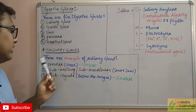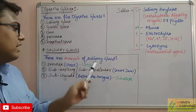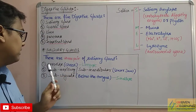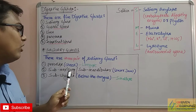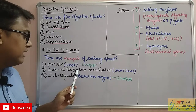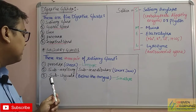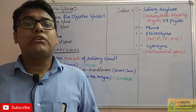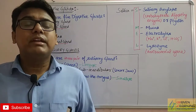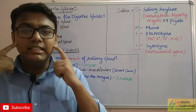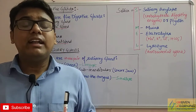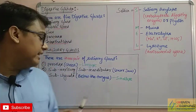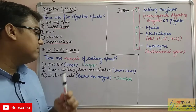As you can see on the board, there are three pairs of salivary glands. First is parotid, second is sub-maxillary or sub-mandibular, and third is sublingual. The parotid salivary gland is present near the cheek and it is the largest salivary gland.